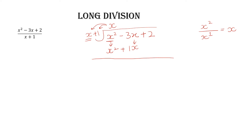Rather than writing x² minus x², the easiest way is that you just change the sign of the newly formed row. That means here x² becomes negative and the positive x becomes negative. Now plus x² minus x² — they cancel out.